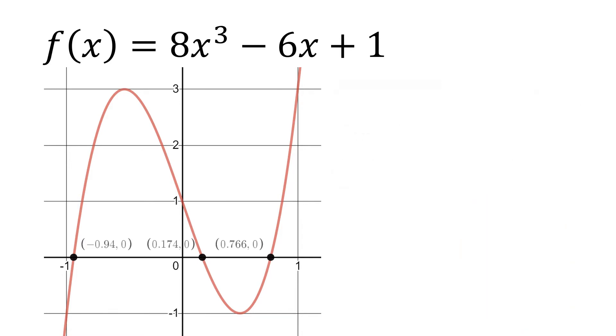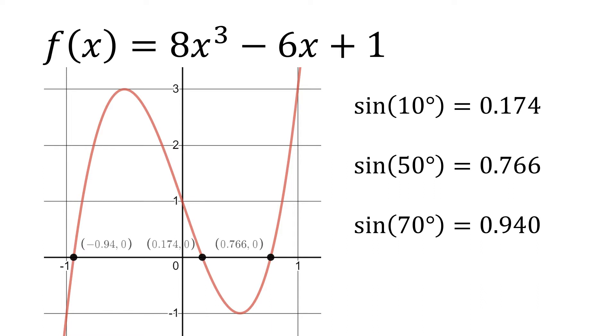Since the rational root theorem failed to supply us with any rational roots, yet we see there are indeed three real roots for this function, then all the roots must be irrational. Not the let's make bad choices kind of irrational, just the let's be radical kind of irrational. Let's take a quick peek at the decimal approximations for these real zeros.